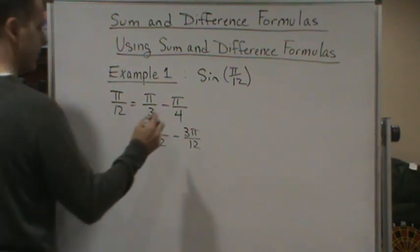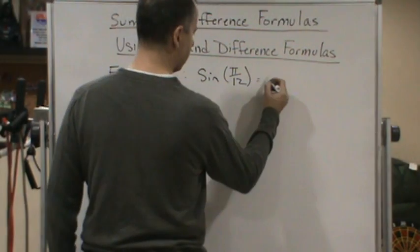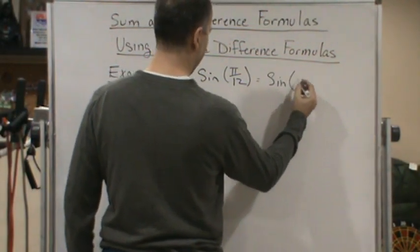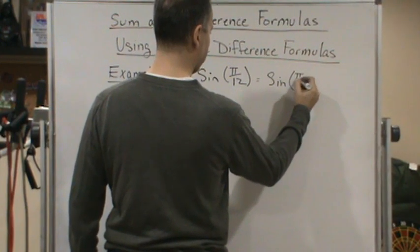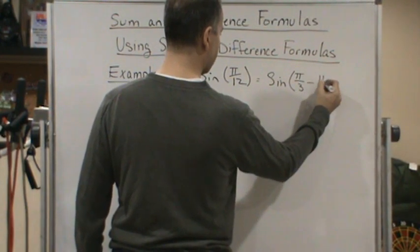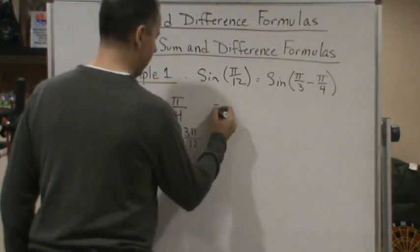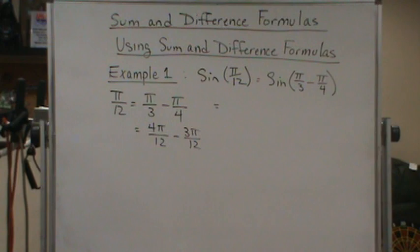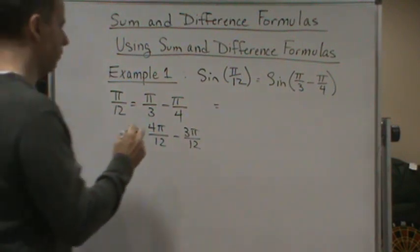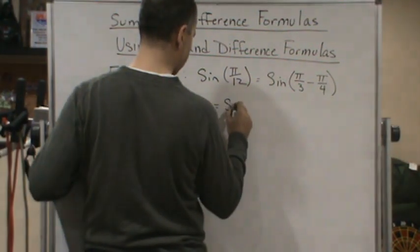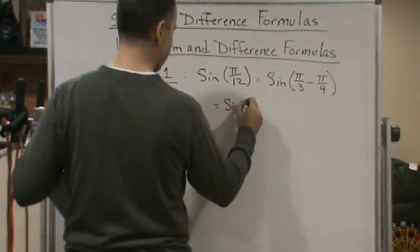Okay, so now what we're going to do is we're going to write this as equal to sine of pi over 3 minus pi over 4. Now, we're going to use the identity for sine of u minus v. So what is that? That's sine u, sine u.